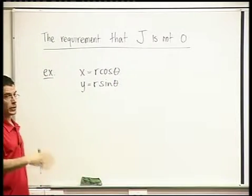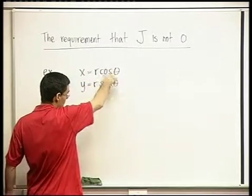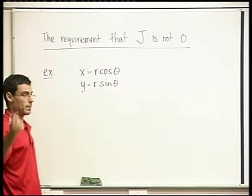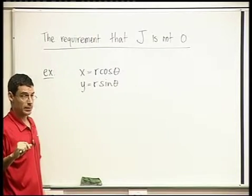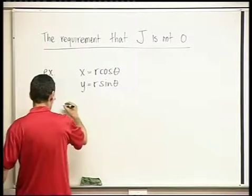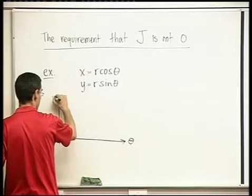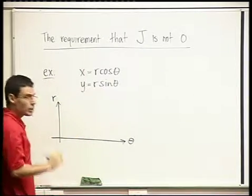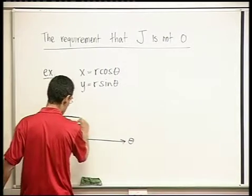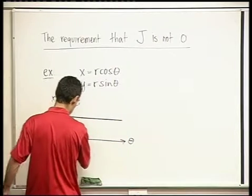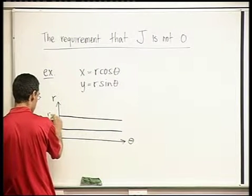This gives us a correspondence between the xy plane and the r-theta plane, where each point xy can be converted to a point r-theta, where r measures the distance from the origin in the xy plane, and theta the angle to the positive x-axis. Here's the r-theta plane — this axis is theta, this is r — and let's look at the following domain in the r-theta plane. Let's look at a strip where this is r equals 1 and this is r equals 2.